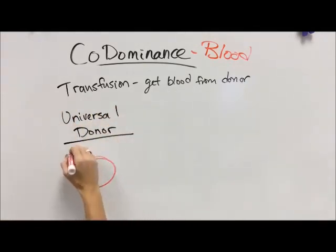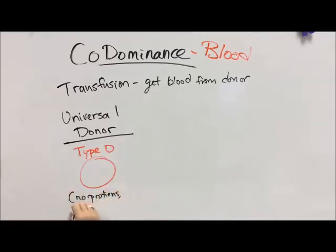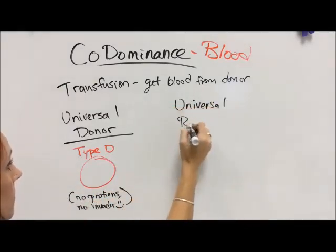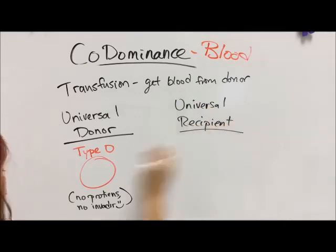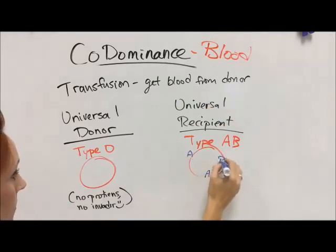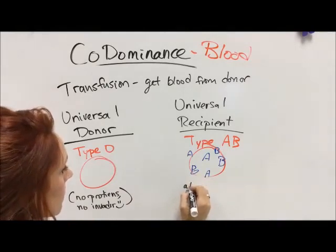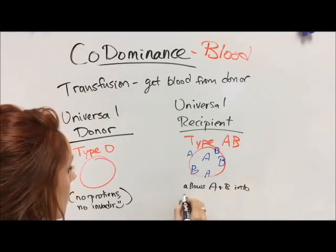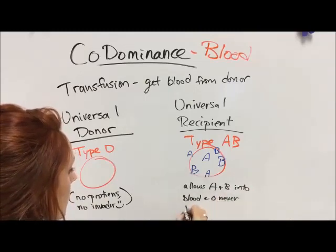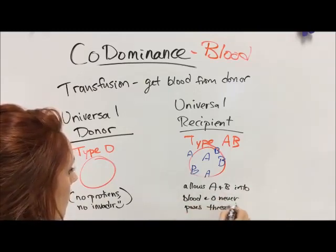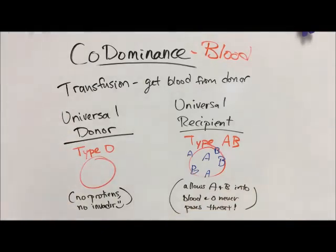We call type O the universal donor because these people have no proteins on the outside — everybody's body recognizes them as friendly. They can give blood to anybody, but can only receive type O. The universal recipient is type AB, because they have everything on the outside — they can take A, B, AB, or O. But they can only give to other type AB recipients, because they have so much on the outside. And that's blood co-dominance.